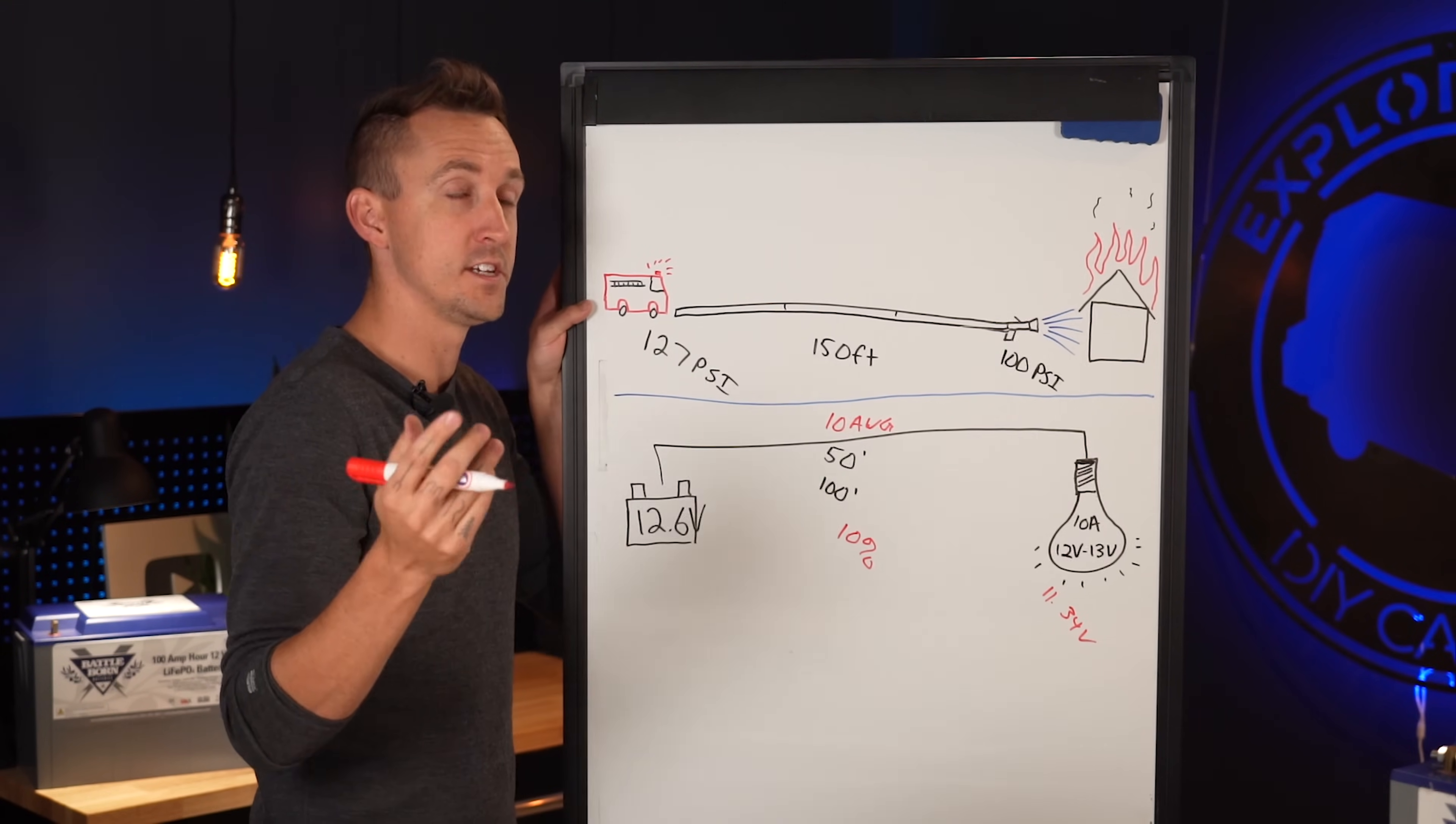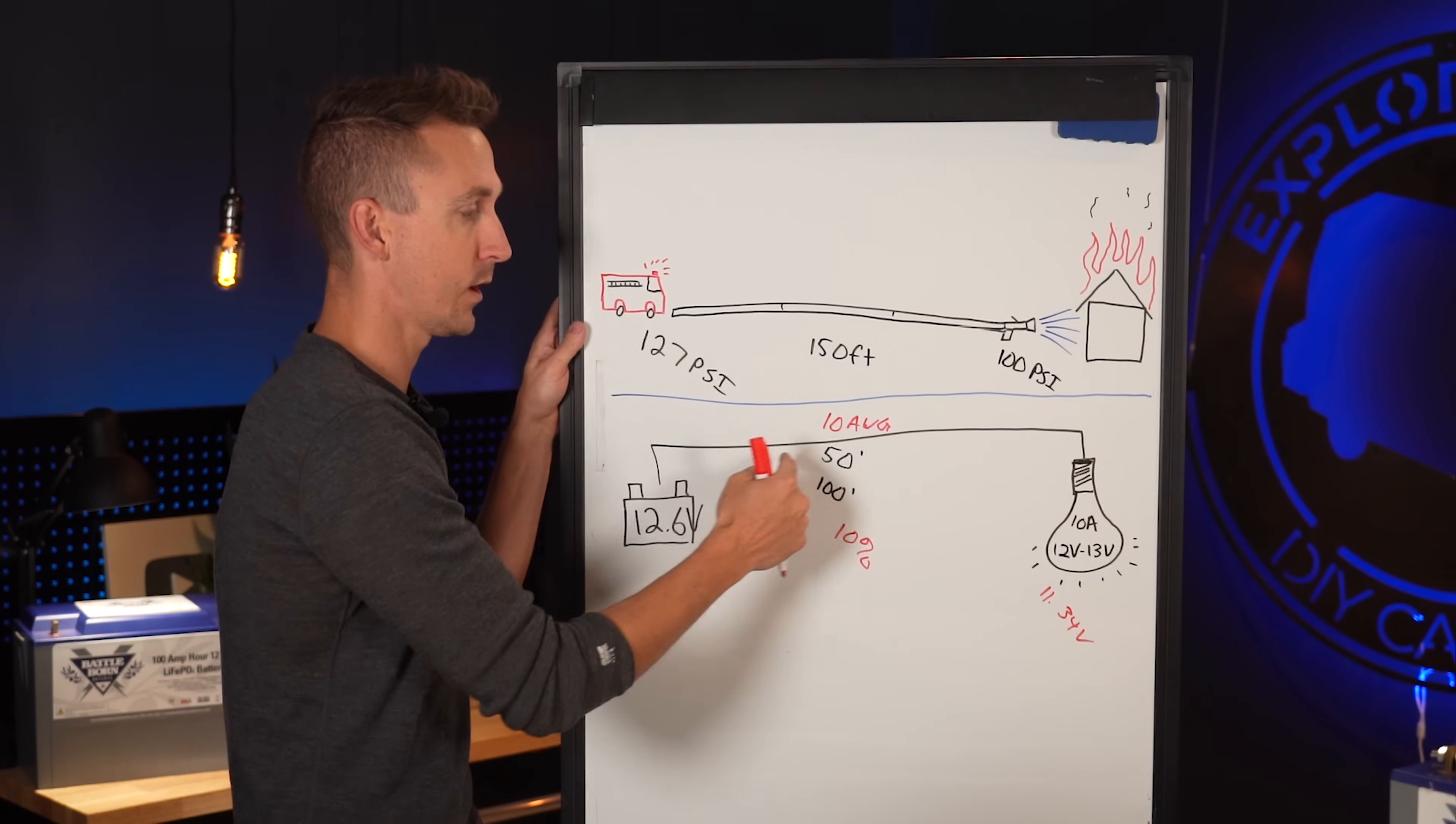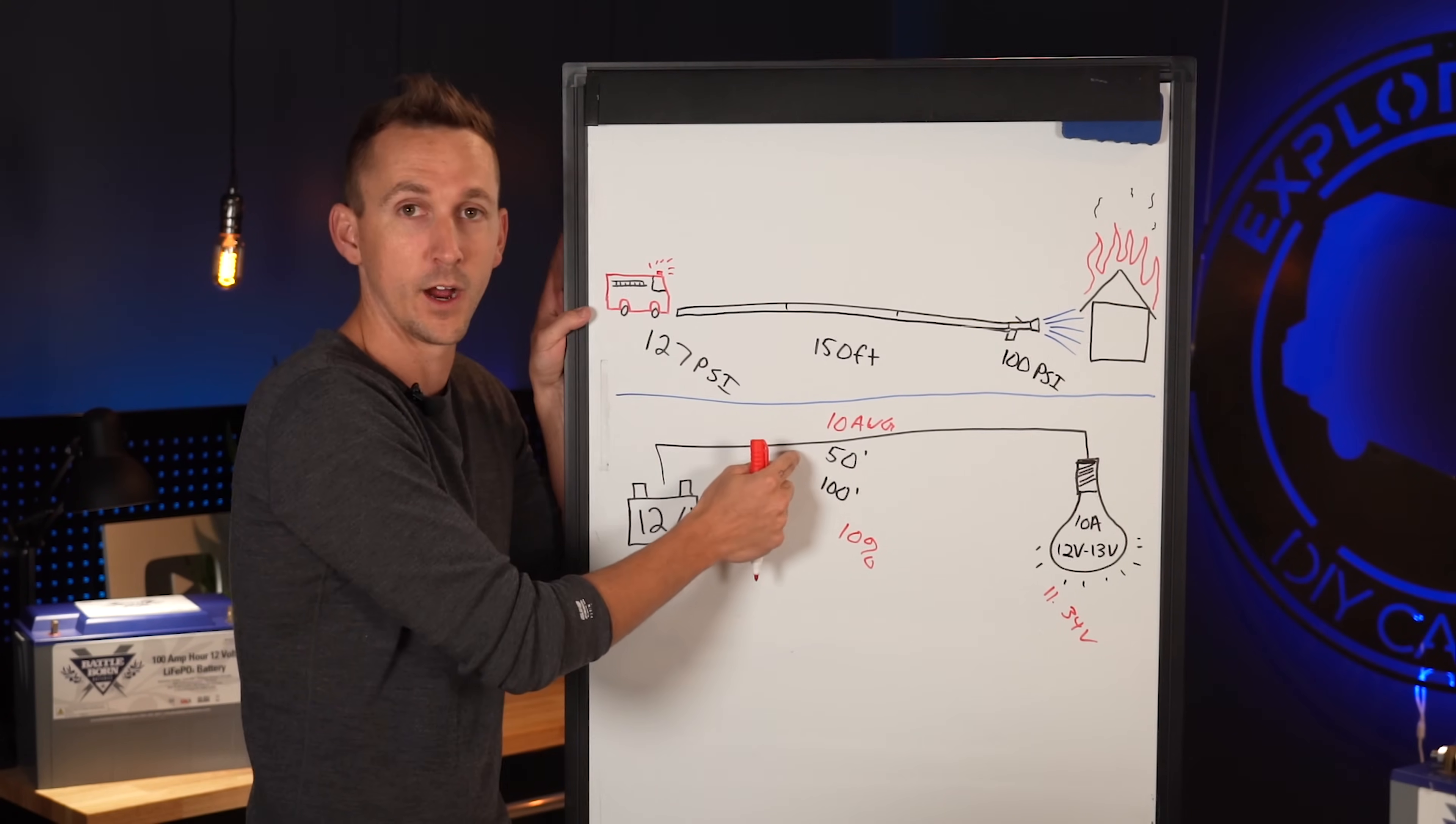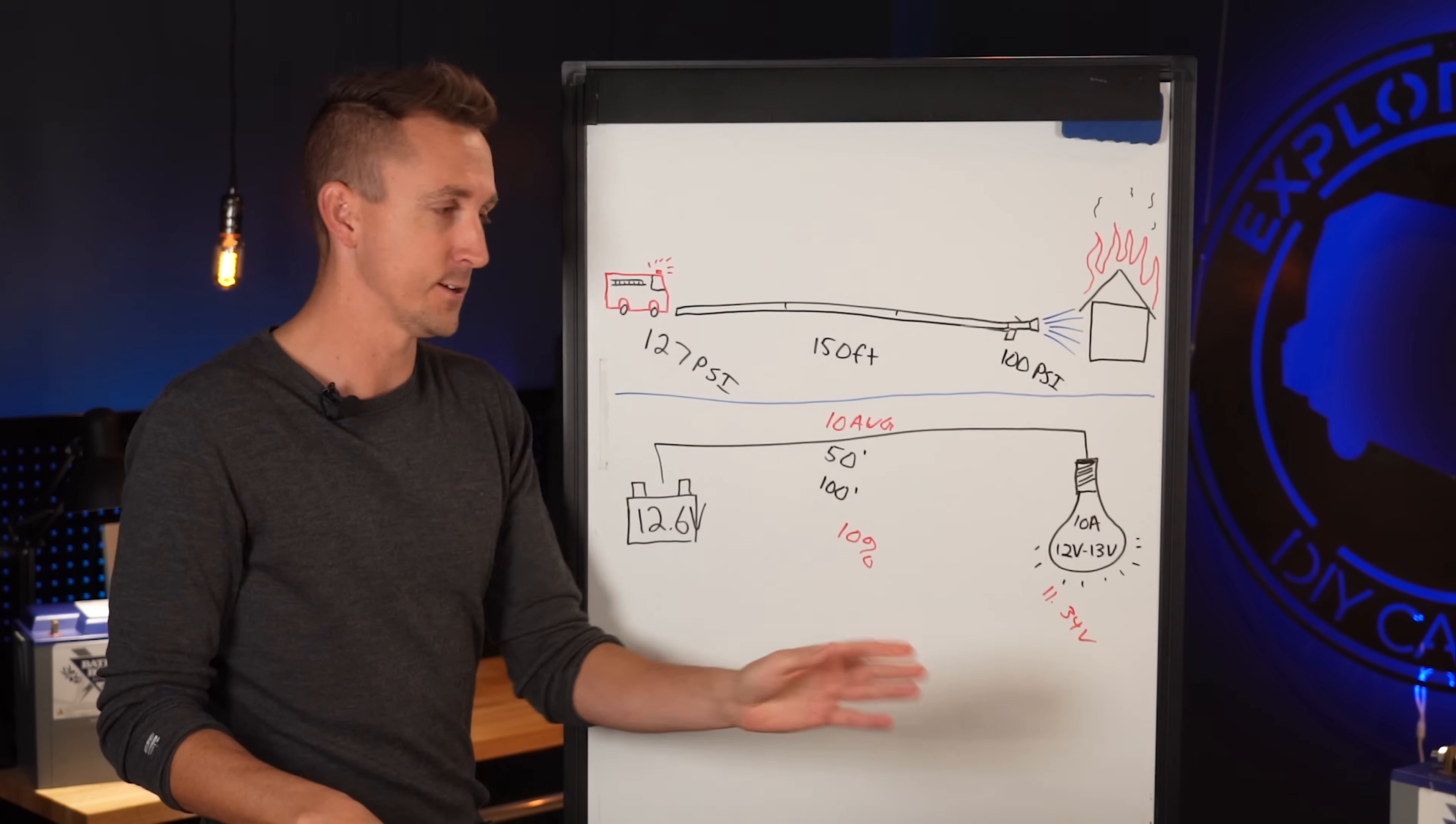How can we decrease the voltage drop? Well, we could move the light shorter. We would move the light closer to the battery so we're not using quite as much wire, so there's not quite as much friction inside of that wire to cause the voltage drop. But you know, sometimes that's not possible. Sometimes you need your light where you need your light and you need your batteries where you need your batteries.